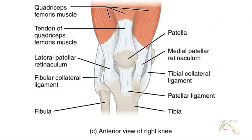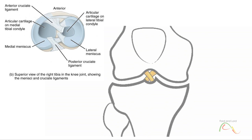In the fully extended knee position, both collateral ligaments are pulled tightly, thus providing stability and support to the extended knee and preventing side-to-side or rotational motions between the femur and tibia. The articular capsule of the posterior knee is thickened by intrinsic ligaments that help resist knee hyperextension.